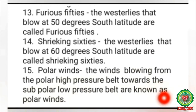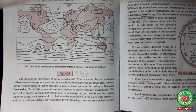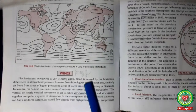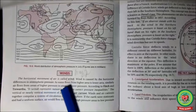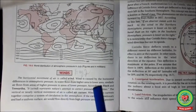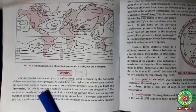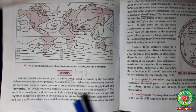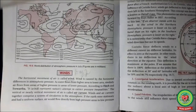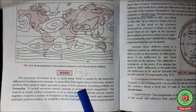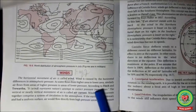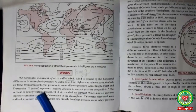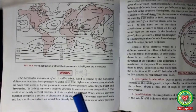Now let us start the chapter from page 276. Winds - the horizontal movement of air is called wind. Wind is caused by the horizontal difference in atmospheric pressure between two places. As water flows from a higher area to a lower area, similarly air flows from areas of higher pressure to areas of lower pressure.